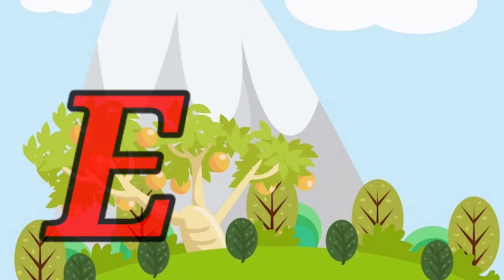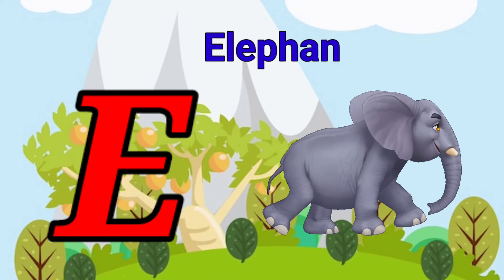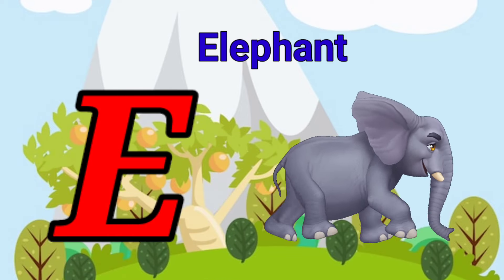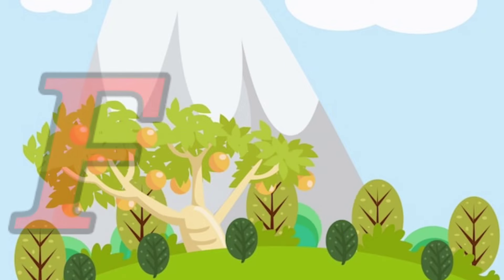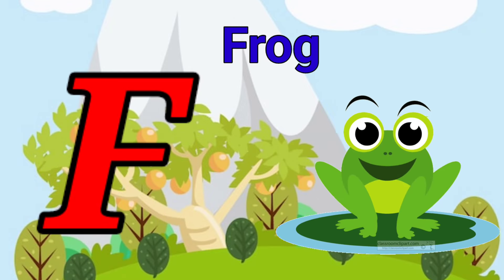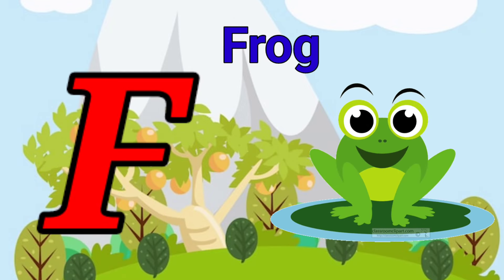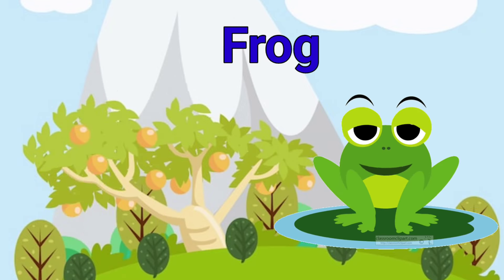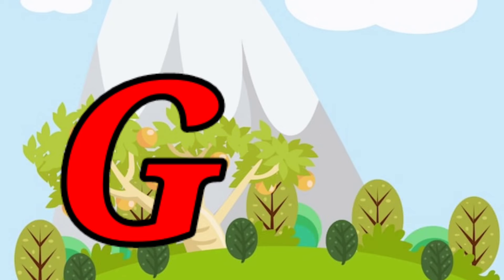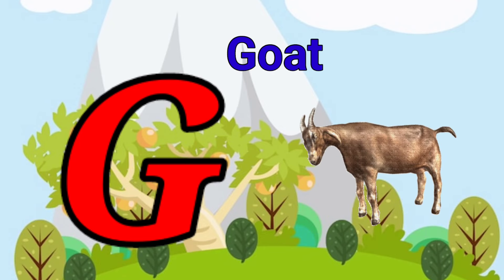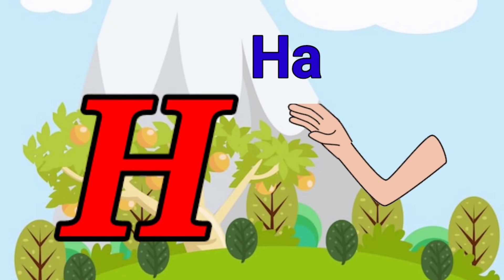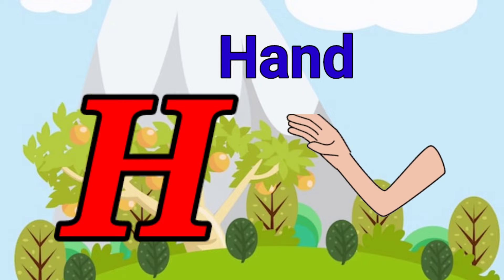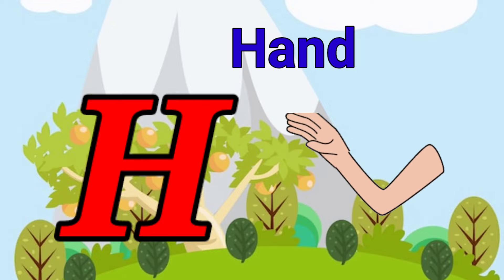E is for elephant, e-e-elephant. F is for frog, f-f-frog. G is for goat, g-g-goat. H is for hand, a-a-hand.